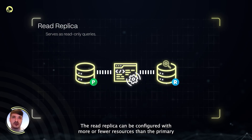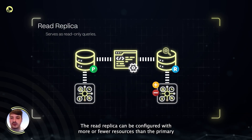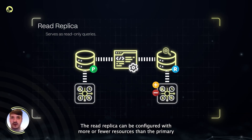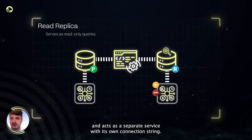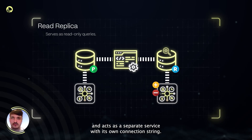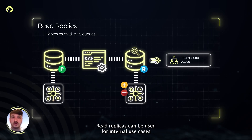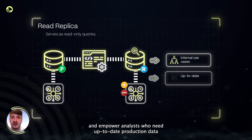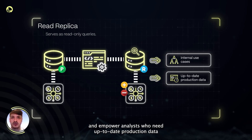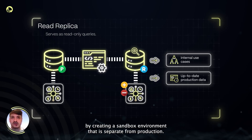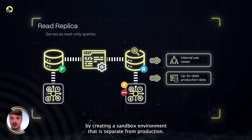The read replica can be configured with more or fewer resources than the primary, and acts as a separate service with its own connection string. Read replicas can be used for internal use cases and empower analysts who need up-to-date production data by creating a sandbox environment that is separate from production.